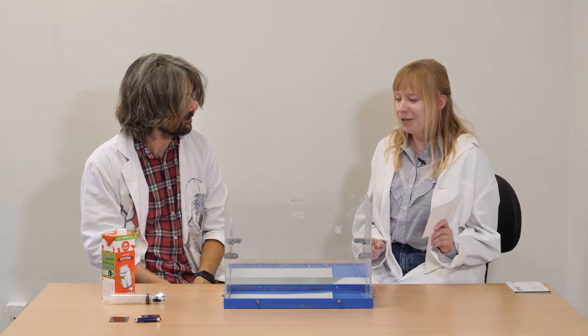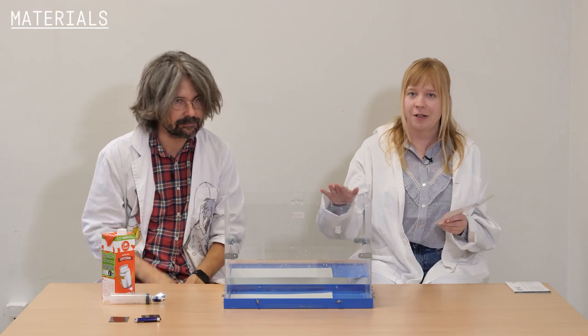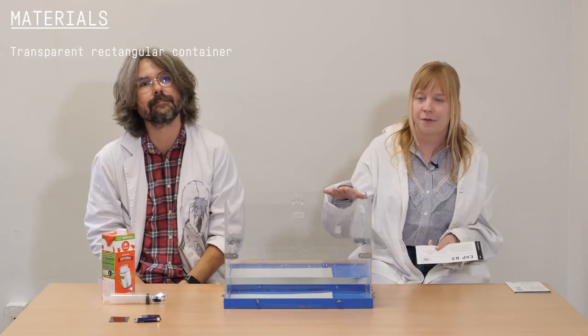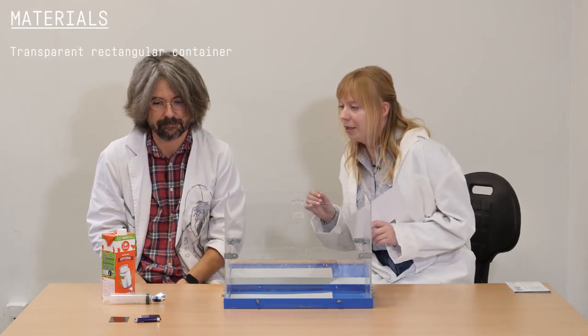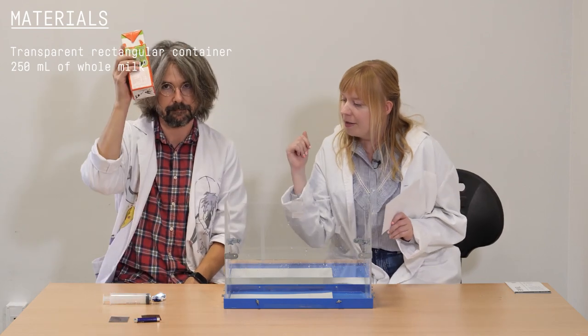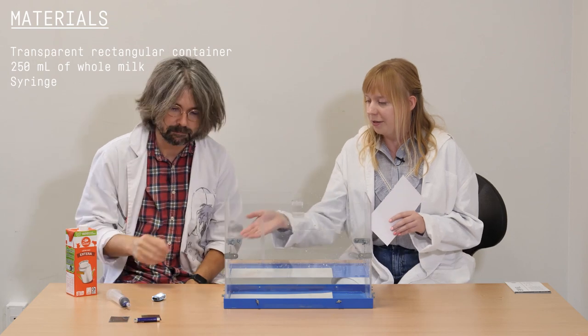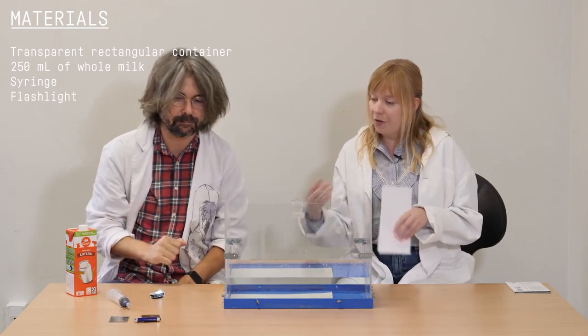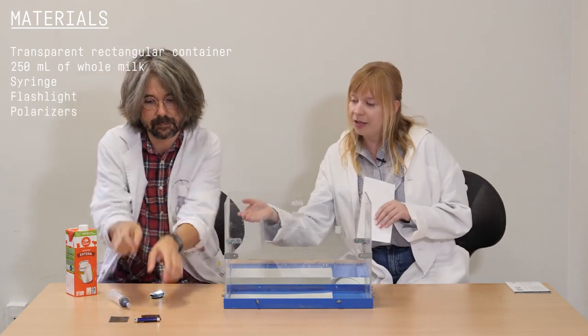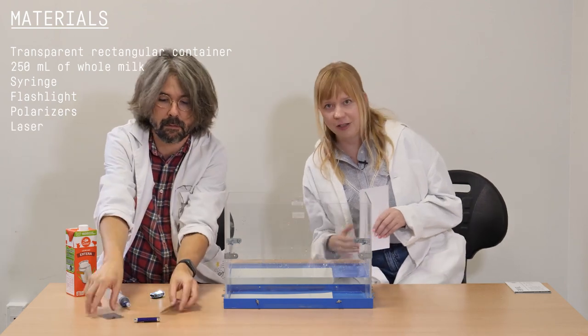For this experiment we need a transparent rectangular tank, for example a fish tank, and we need milk, something to measure the milk with, for example a syringe, and we need a flashlight. We also need polarizers and a laser to test the polarizers.